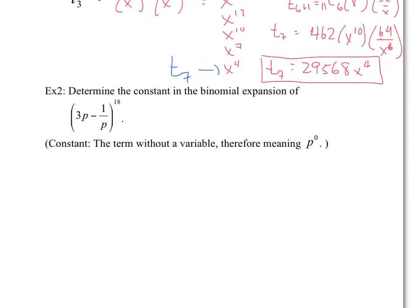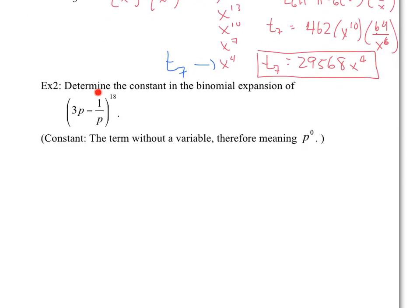Next example: Determine the constant in the binomial expansion. The constant is the term without a variable, meaning p to the power of 0. We tackle it the exact same way. We know our term has p to the power of 0. This 3, which is a coefficient, will not affect the exponent of p. So the first term takes p to the power of 18 minus k, and the second term is 1 over p, which is p to the negative 1, to the power of k. Now I just have to solve for k.